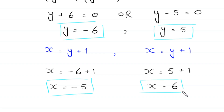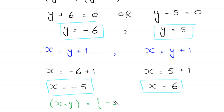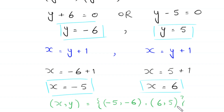So from here we get two pairs of solutions: x comma y. The first pair is negative 5 comma negative 6, and the second pair is 6 comma 5. This is the final answer of this equation.